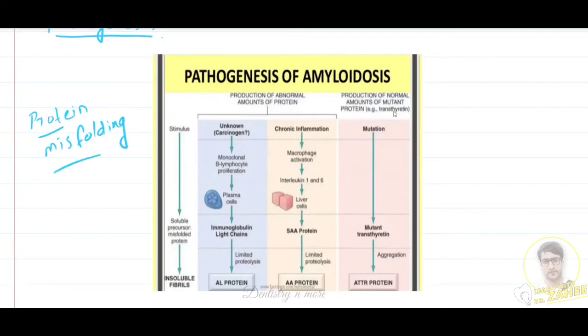Let's see the pathogenesis of amyloidosis. Normally stimulus happens and soluble precursor proteins and misfolded proteins will be there, and it gets deposited in the organ as insoluble fibrils. Suppose the causative thing is a carcinogen - there will be beta lymphocyte proliferation leading to plasma cells, then immunoglobulin light chains. This causes limited proteolysis. Normal protein splitting or protein breakage is not happening and there will be accumulation of AL protein.